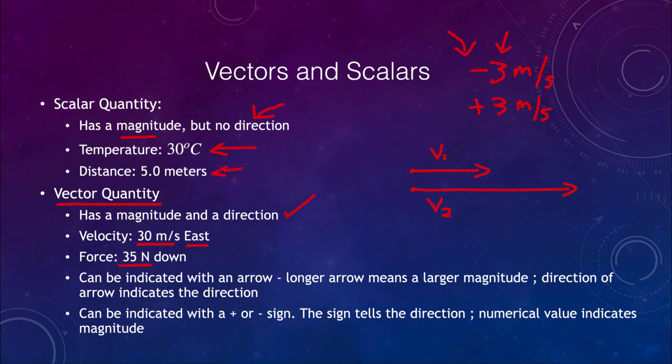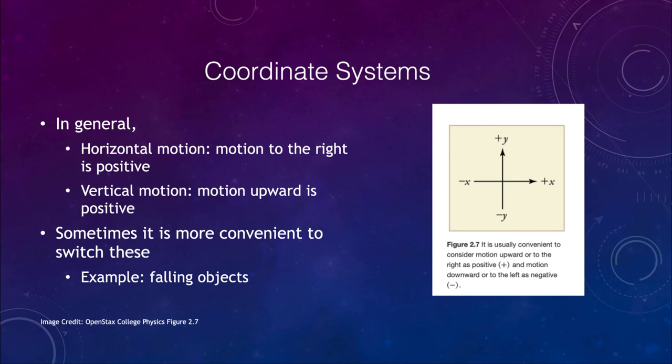Now, how do we determine directions and zero points in some of this? Well, in some cases, we set up our coordinate system. In general, we look at horizontal motion. For horizontal motion, to the right is positive, so moving to the right would be positive and moving to the left would be negative. For vertical motion, we generally consider upward motion to be positive and downward motion to be negative.